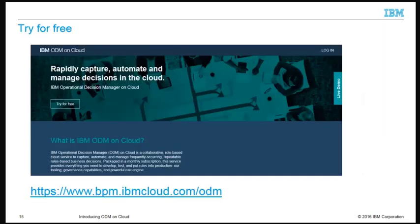IBM Operational Decision Manager on Cloud is available from IBM Passport Advantage through a single monthly subscription that includes software, infrastructure, and management services, and delivers most of the capabilities of the ODM standard on-premise version. You can try ODM on Cloud for free — use the URL on the slide to sign up and try it out. To learn more about ODM on Cloud, please visit the IBM Knowledge Center. Thanks for watching.